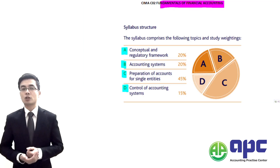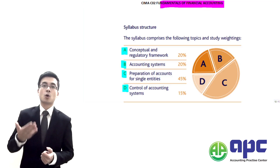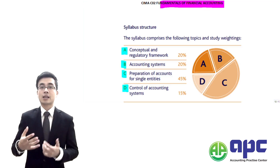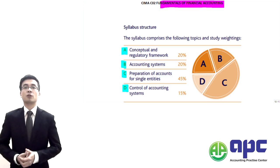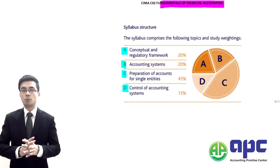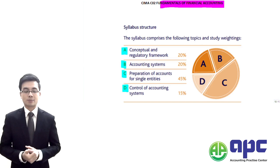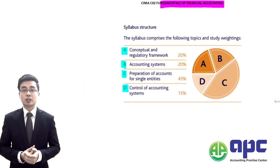Including how much assets they've got, for example non-current assets, receivables, inventory, and how much debt they've borrowed, for example from the bank or issued some bonds, corporate bonds. You can download those from those websites. But what do I mean by financial accounting?